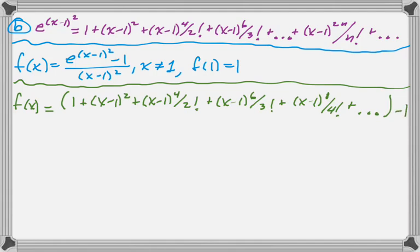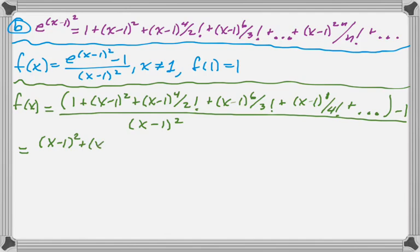Then we have the minus 1. So that's the numerator of f of x. Then all over the quantity x minus 1 squared. So what's going to happen is the 1 from the series and the minus 1 in the numerator are going to cancel out, leaving us just with all of this stuff. So we write that again.